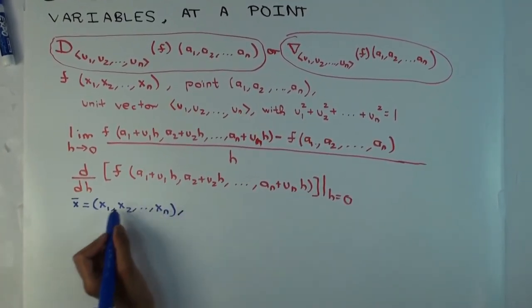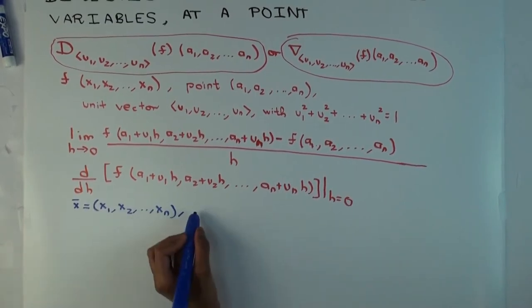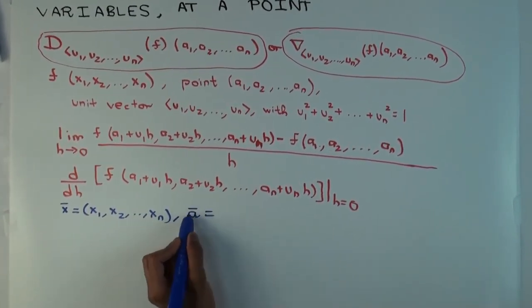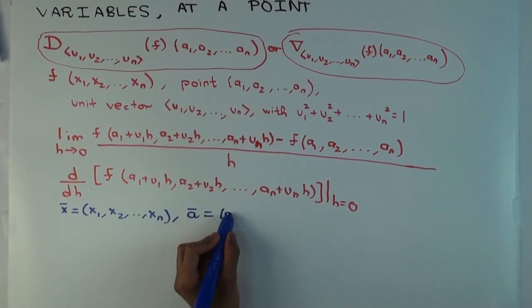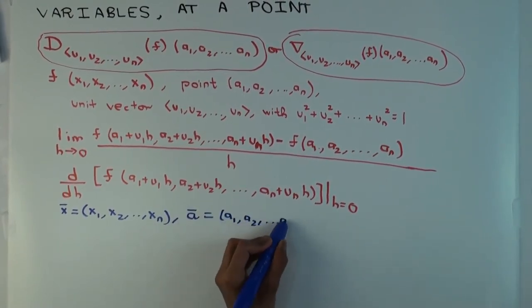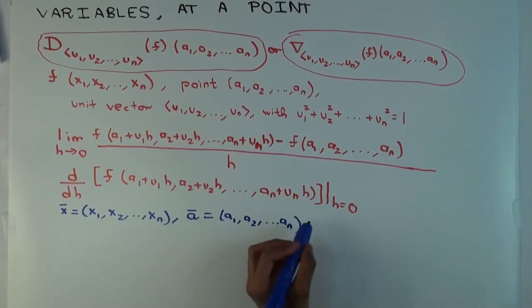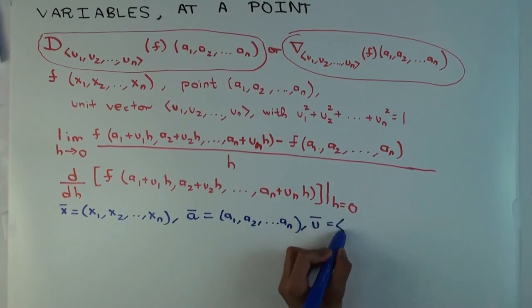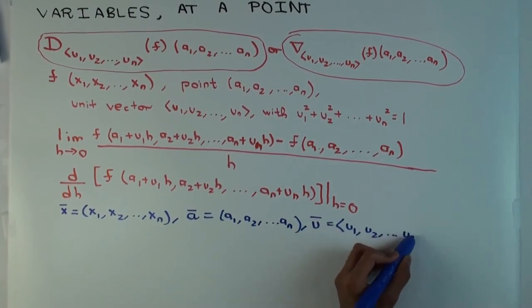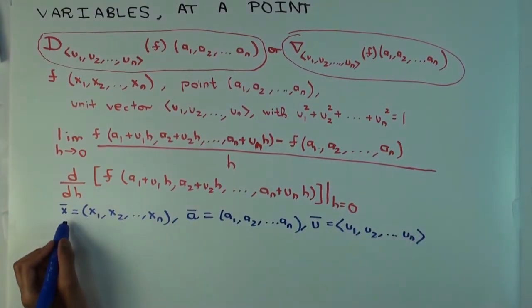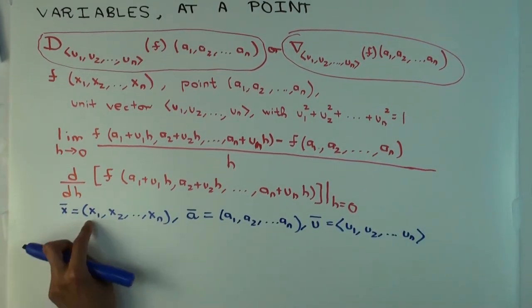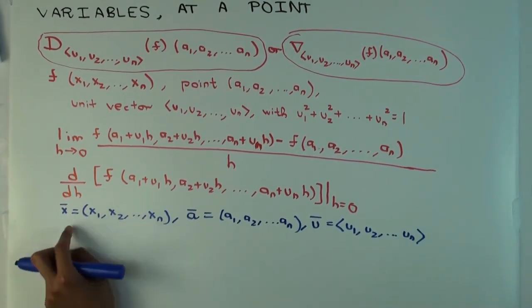I'm thinking of this sort of as a vector. I'm thinking of ā as a specific point. So ā is just the actual point, thinking of it not just as a set of coordinates, but now as a vector. And I think of ū as basically this unit vector. So now f is now a function of x̄. Instead of writing f of x₁ comma x₂ to xₙ, I just write f of x̄.